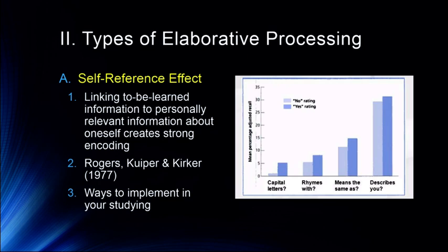Nate Silver, for example, who runs the FiveThirtyEight blog, is a very famous statistician who got interested in stats because of his passion for sports statistics. He used his passion to learn statistics — he was able to take it and apply it to his life. In psychology, this is often easy, particularly in abnormal psychology, where you can just diagnose everyone you know. You remember borderline personality disorder because that's your friend Katie, narcissistic personality disorder is your friend Chris. So use this kind of self-referential processing — it's a really rich source of information.